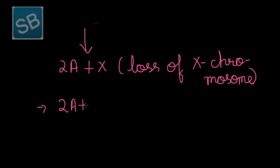One would contain 2A plus XX, that would be normal, and the other would contain only 2A plus X, which would be sterile in nature. And so, such individuals would be considered as gynandromorphs.